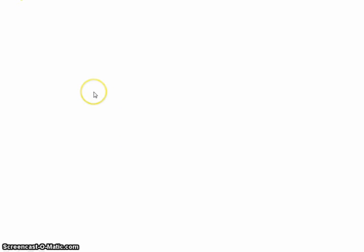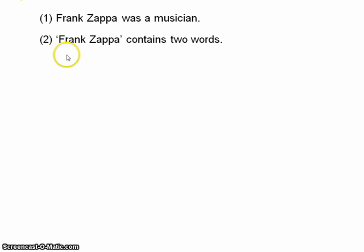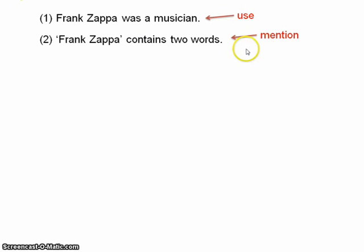Consider these two sentences: 'Frank Zappa was a musician' and 'Frank Zappa contains two words.' In both of these sentences we have the name Frank Zappa, but it's functioning in very different ways in each sentence. In the first sentence, his name is being used, and in the second, it is being mentioned.